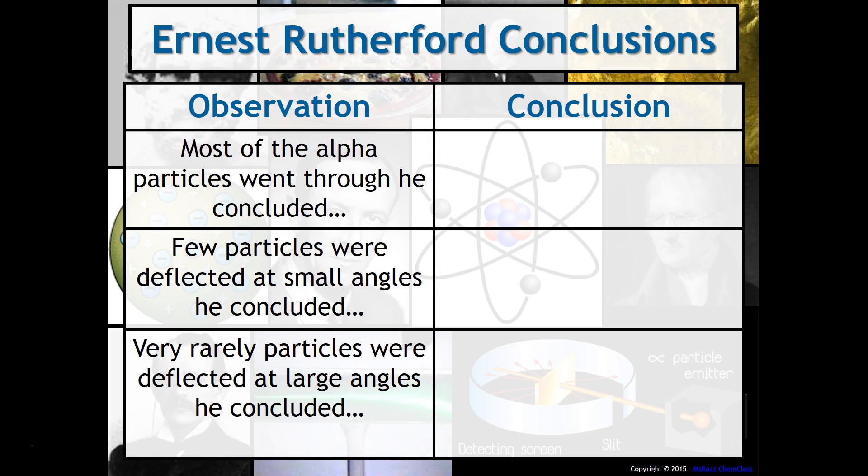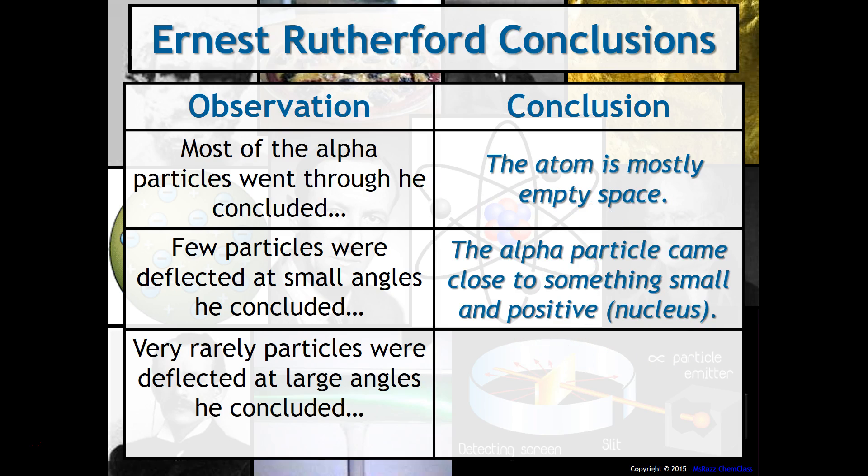First, since the alpha particles went straight through, Rutherford was able to conclude that the atom is mostly empty space. Since a few of the particles were deflected at small angles, he was able to conclude that the alpha particle came close to something small and positive.